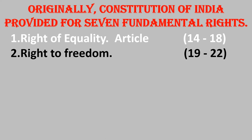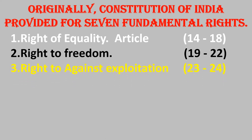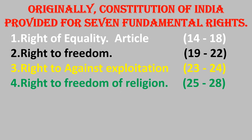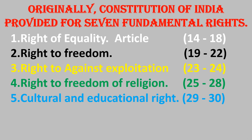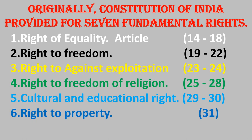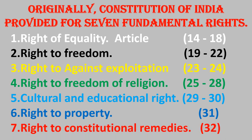Number three: Right against Exploitation, from Article 23 to 24. Number four: Right to Freedom of Religion, from Article 25 to 28. Number five: Cultural and Educational Rights, from Article 29 to 30. Number six: Right to Property, Article 31. Number seven - the heart of the Indian Constitution's fundamental rights - Right to Constitutional Remedies, Article 32. It is the heart of protection of the remaining rights.